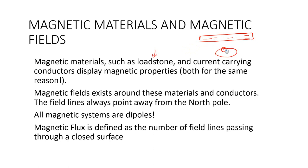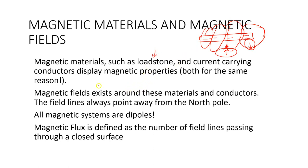By taking a compass — a device used to tell directions — and bringing it closer to the wire while current was flowing, he was able to realize that the compass had a deflection: the north pole of the compass changed direction. With this observation, he realized that once current is flowing through a conductor or wire, there is going to be a magnetic field around the wire.